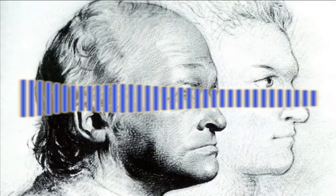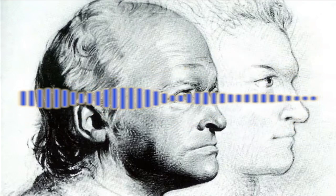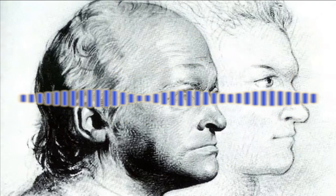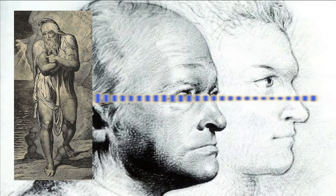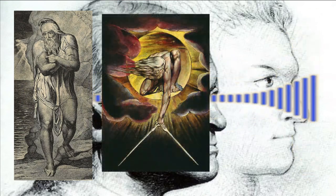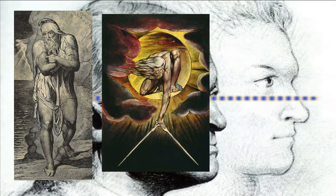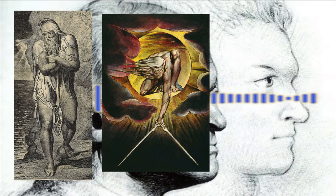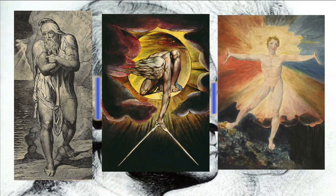For listeners, we have in front of us Blake's earliest expanse engraving, titled Joseph of Arimathea on Rocks of Albion. We've also got the famous frontispiece to Europe, also known as the Ancient of Days, and the almost as famous painting Glad Day, or Albion Rose. If you're listening on YouTube, we'll include visuals there.